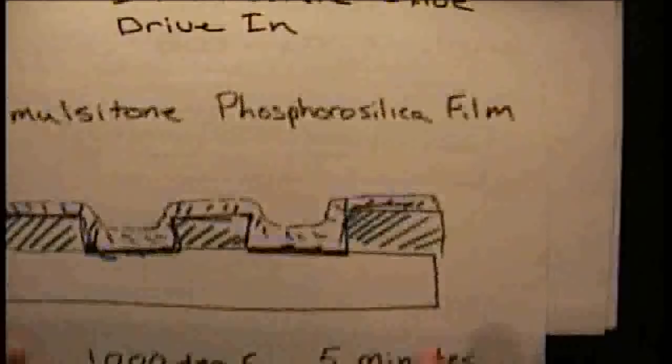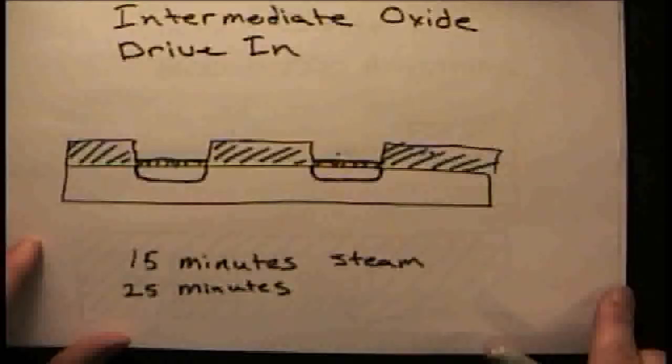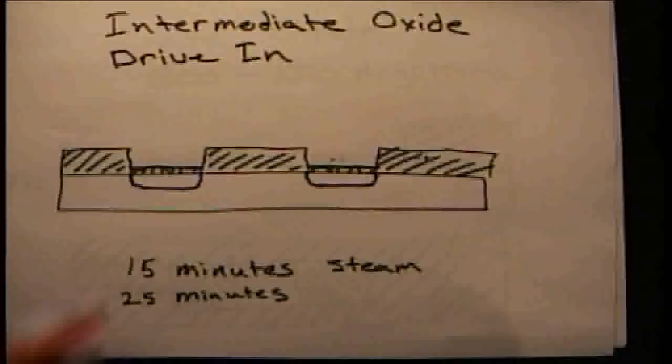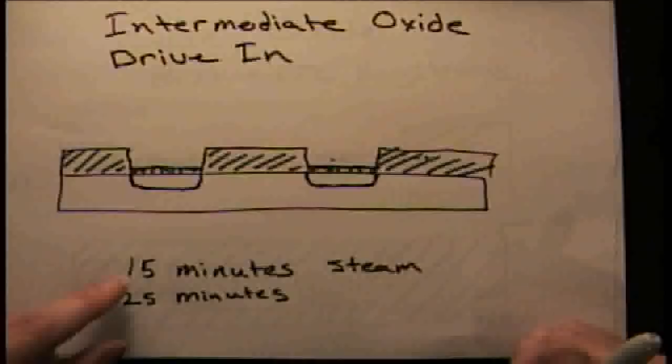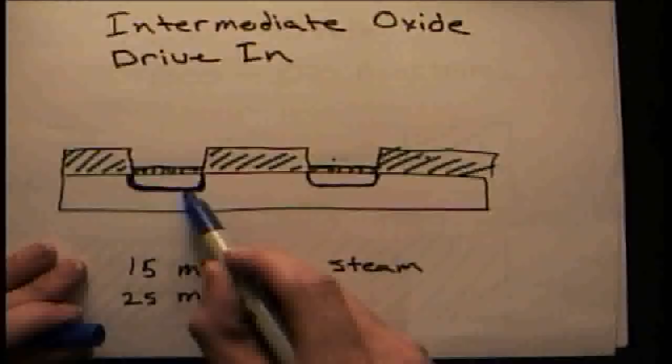The next step is the intermediate oxide layer and the drive-in. You put it back into the furnace. 15 minutes of pumping steam into the furnace will grow an oxide layer to cover up the source and drain regions. Then you're going to stop the steam and for 25 minutes you're going to drive the phosphorus into the wafer. This will lower the resistance in this area and form PN junctions.